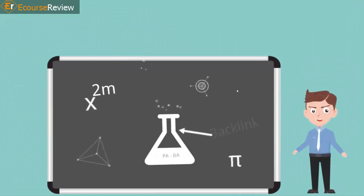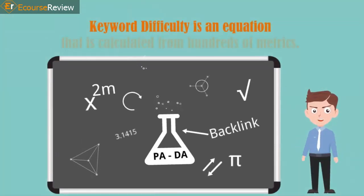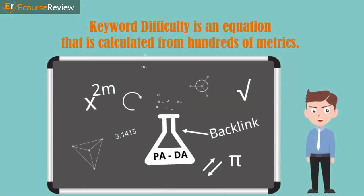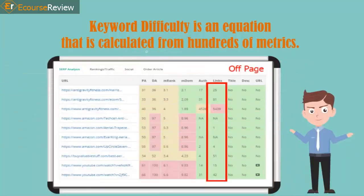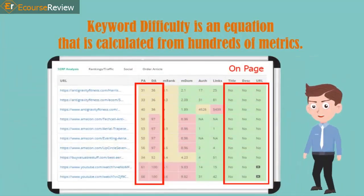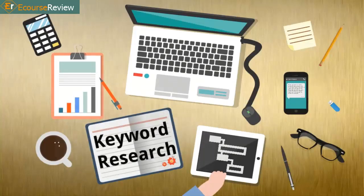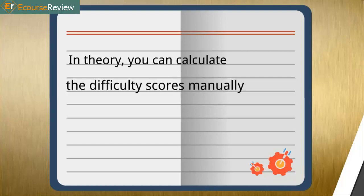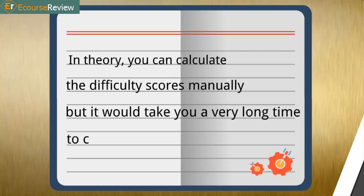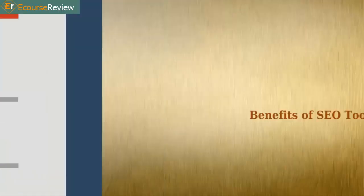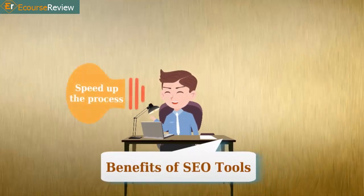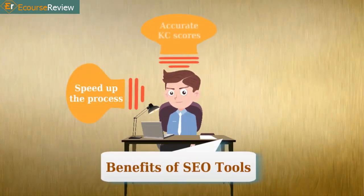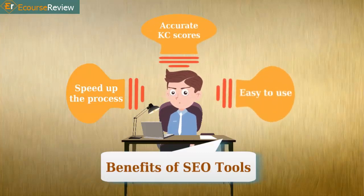Keyword difficulty is an equation that is calculated from hundreds of metrics, but it can be divided into two categories, which include off-page and on-page factors. In theory, you can calculate the difficulty scores manually, but it would take you a very long time. This is the reason why SEO tools can assist greatly by calculating the difficulty at lightning speed and help you decide which keywords you should go after.